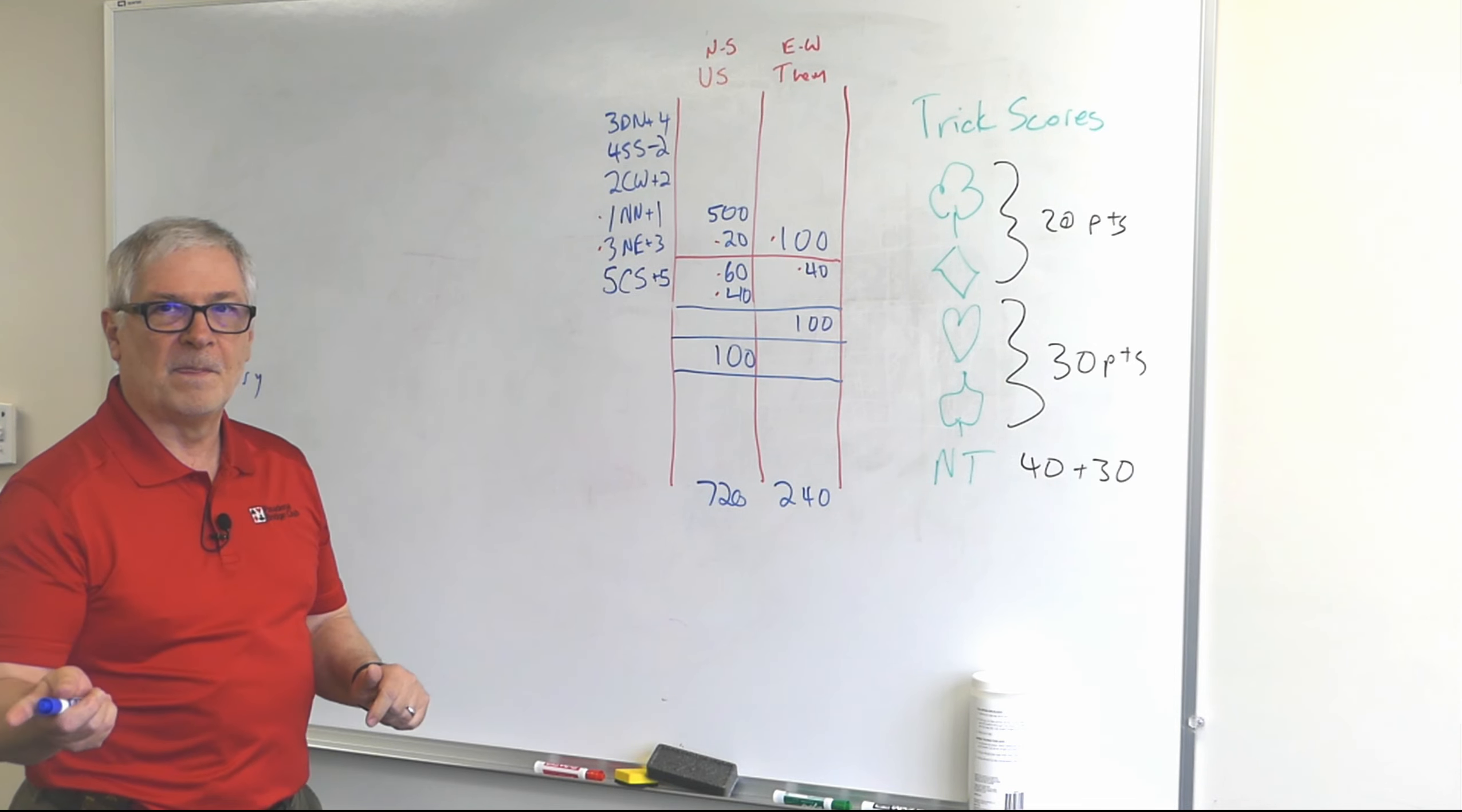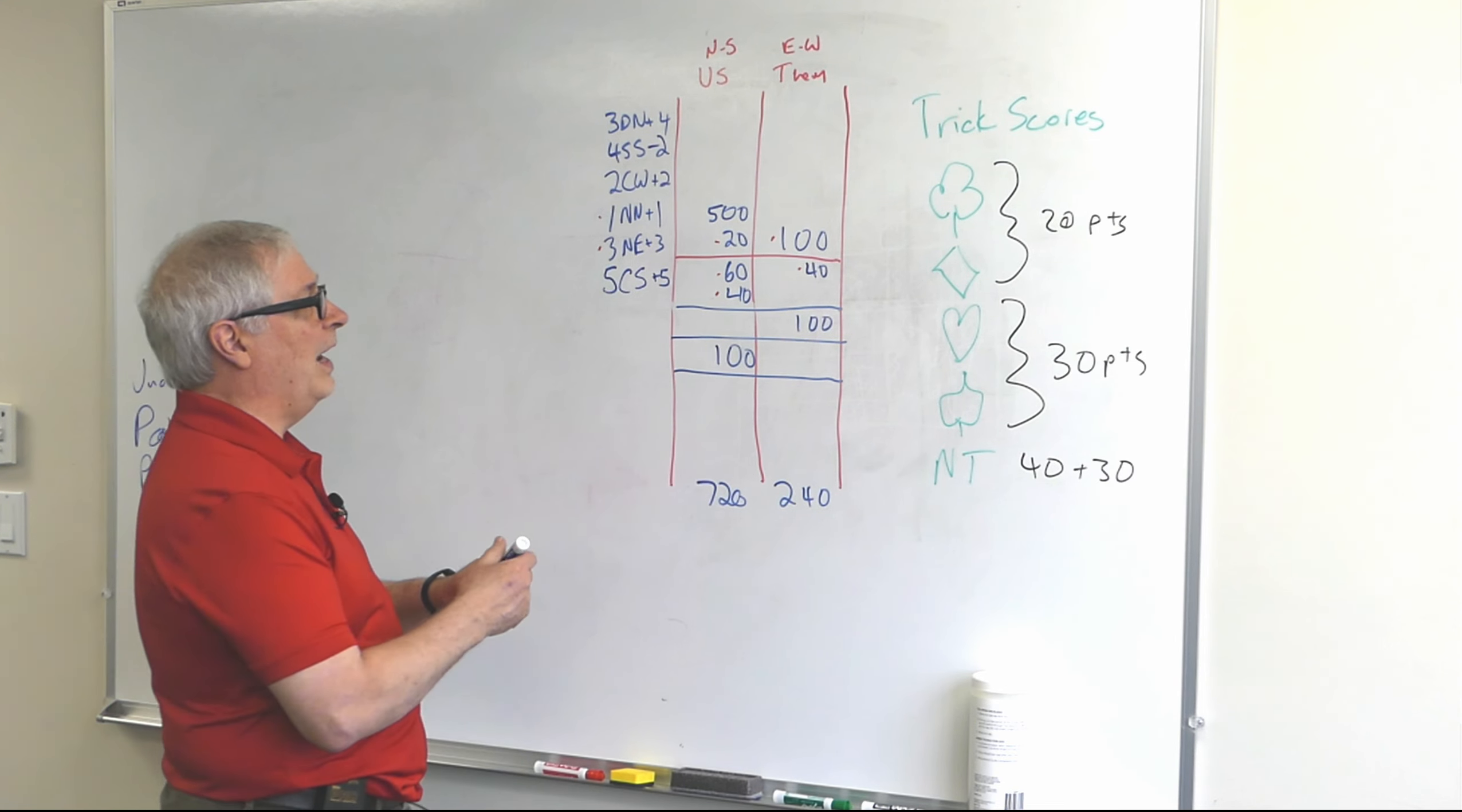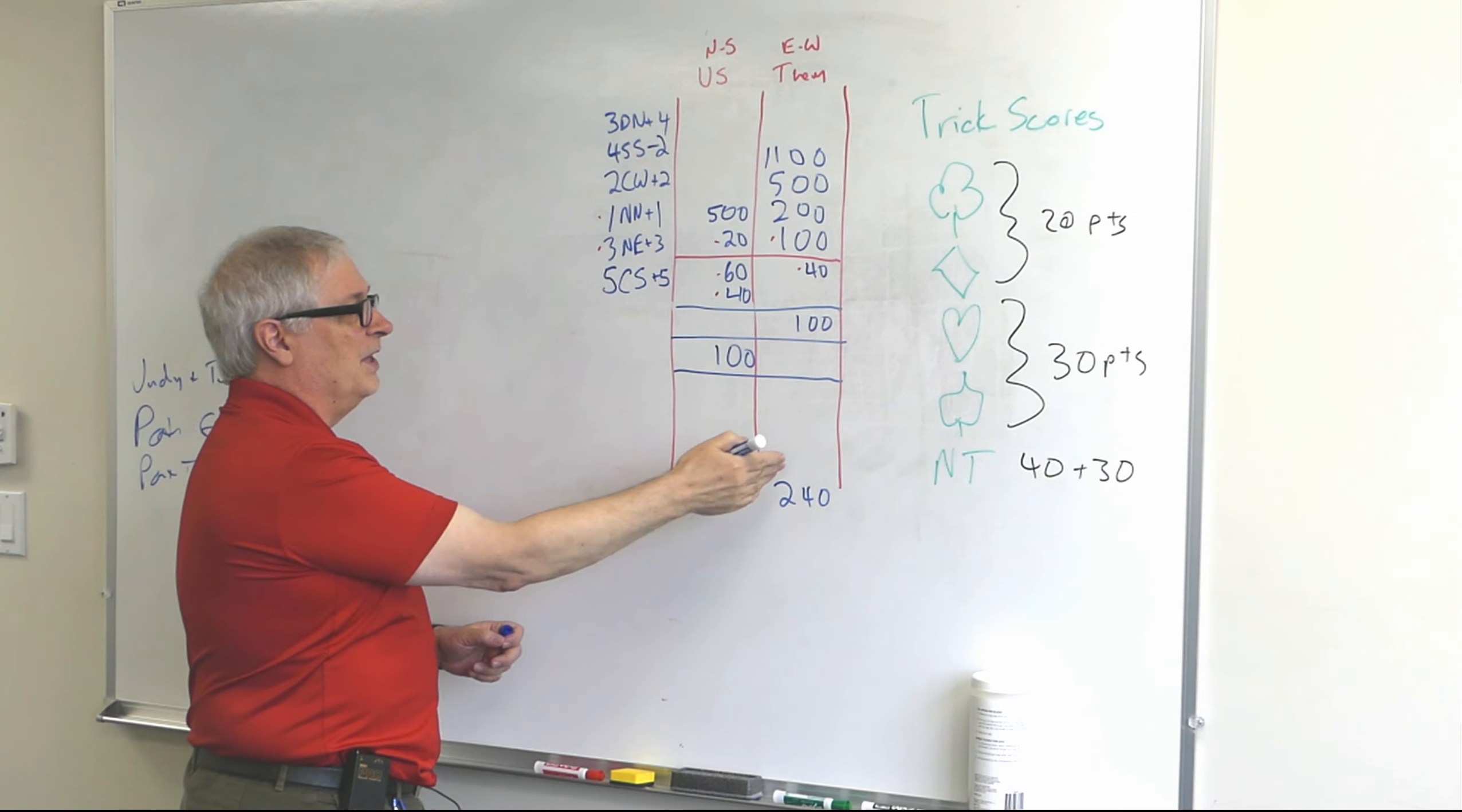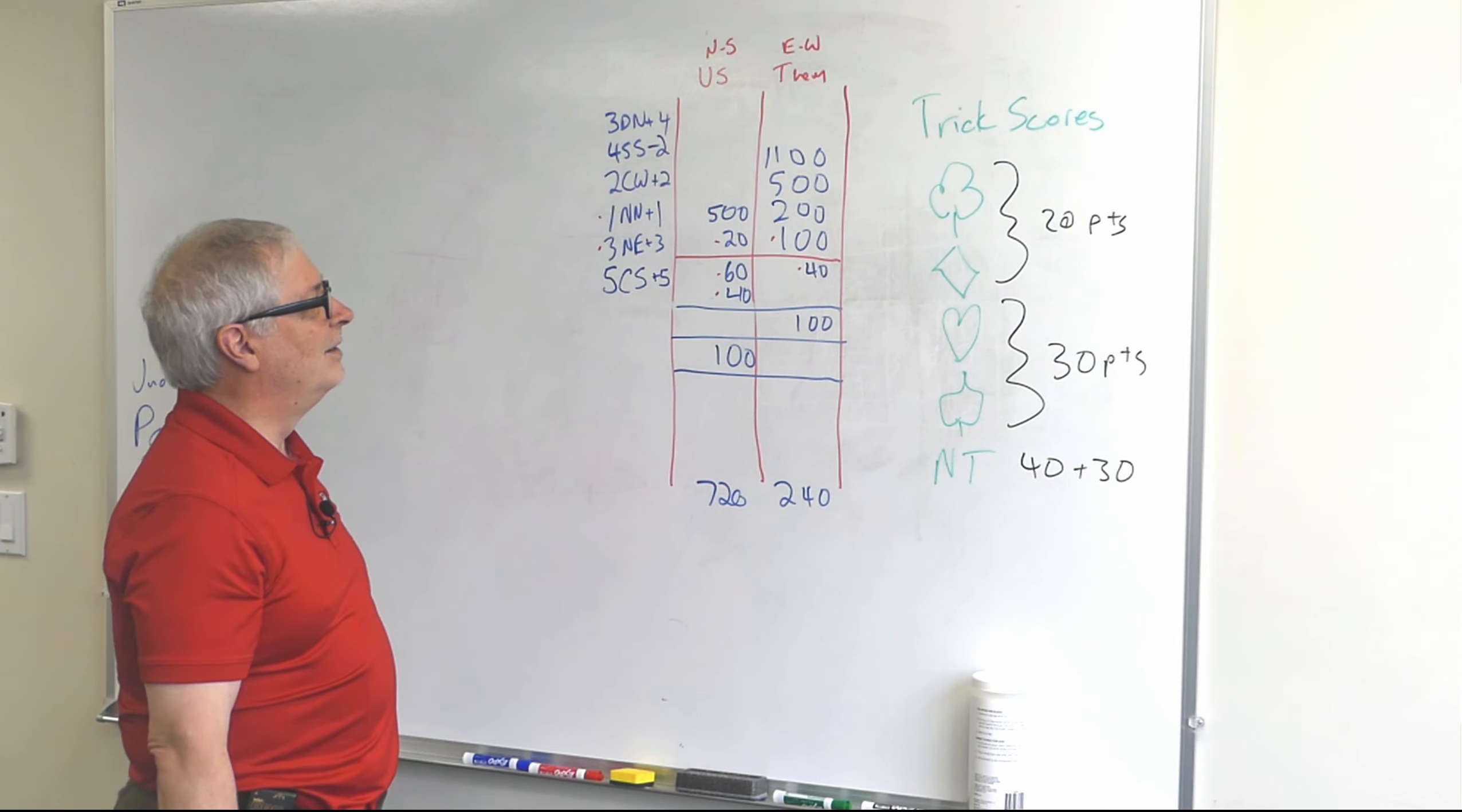Well now just out of curiosity, is there - I guess situations where people actually win the rubber but don't have the points? Yeah, you can. If you're bidding a lot and you're going down and the other side is getting all these bonuses - 200, 500, they're playing doubled contracts, 1100, something like that - this side could win the rubber but this side could win the points. And so you might win two games but you might end up paying because you couldn't make any contracts and they're doubling you and they're setting you, and they're getting all those setting bonuses. All the bonus points go above the line. Oh, all the bonus points.